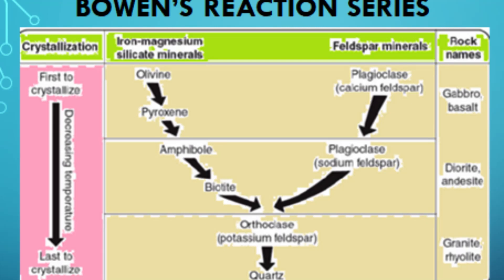Bowen's Reaction Series is important because it explains why different types of igneous rocks have different mineral compositions. For example, if magma cools and solidifies quickly, only the first minerals to crystallize will have time to form, resulting in a rock that is rich in olivine and pyroxene, such as a basalt. If the magma cools more slowly, more minerals will have time to crystallize, resulting in a rock that is rich in plagioclase feldspar and quartz, such as a granite.